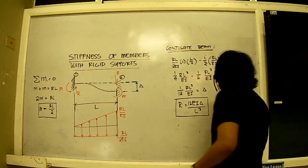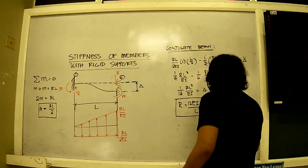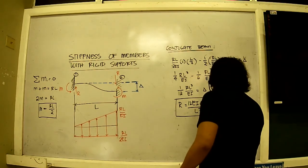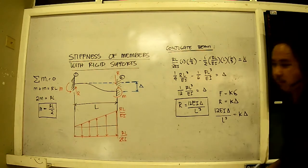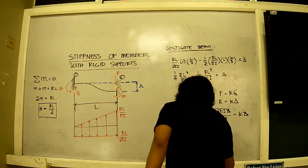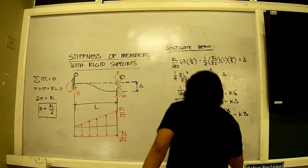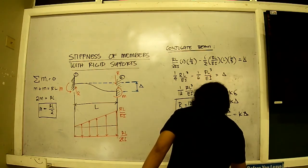Now I substitute all these values here and I will have this. It's equal to K. This cancels out, and we shall have the expression for K, which is equal to 12EI over L cubed.